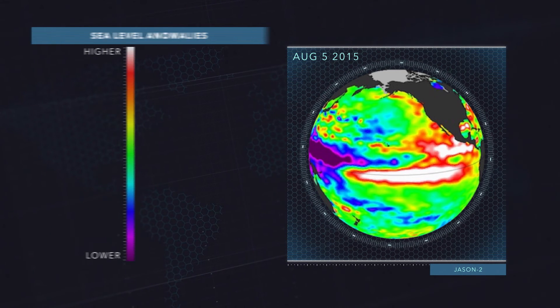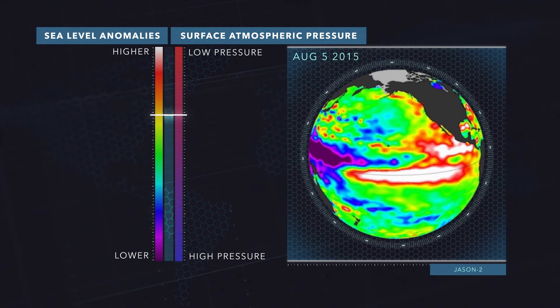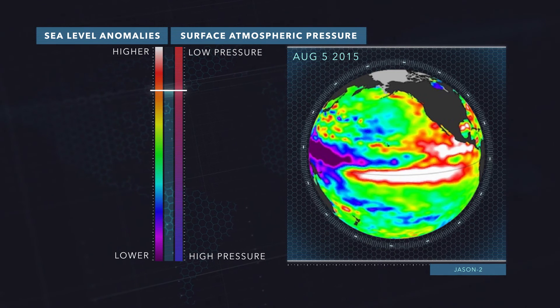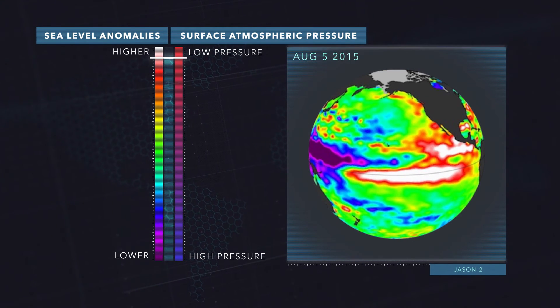El Niño creates lower-than-normal surface pressures near the equator, and that allows the ocean's surface to rise vertically. Think of a hurricane: lower pressure, surface comes up.